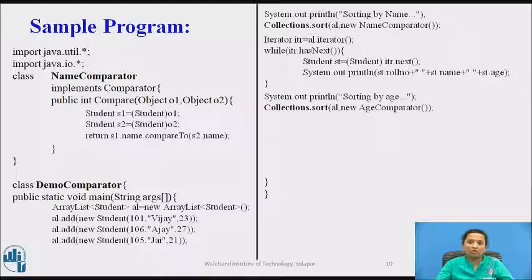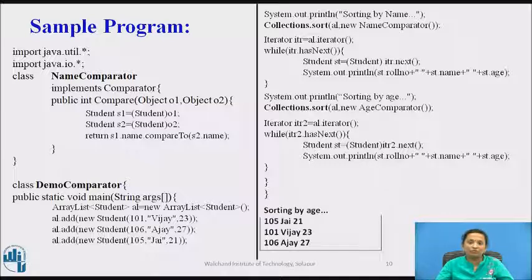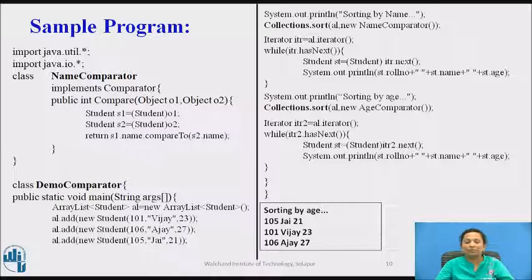In the second sort method call, the ArrayList and AgeComparator are passed as arguments to the sort method. An iterator and while loop are again used to display the student objects after sorting. The sort method sorts the ArrayList based on the age field, and the output shows the student objects sorted in ascending order by age. This is an example of using Comparator interface on two different fields — the name and age of the student.